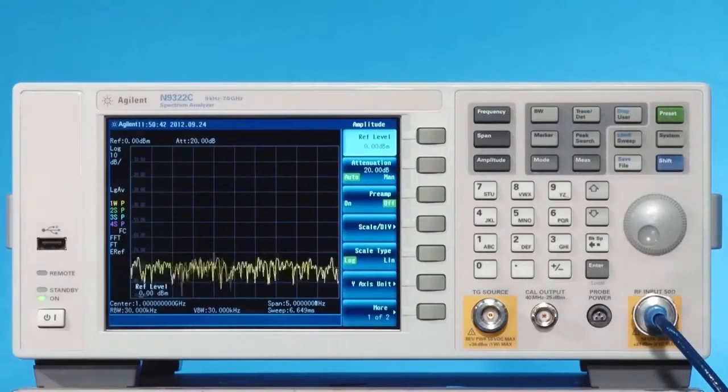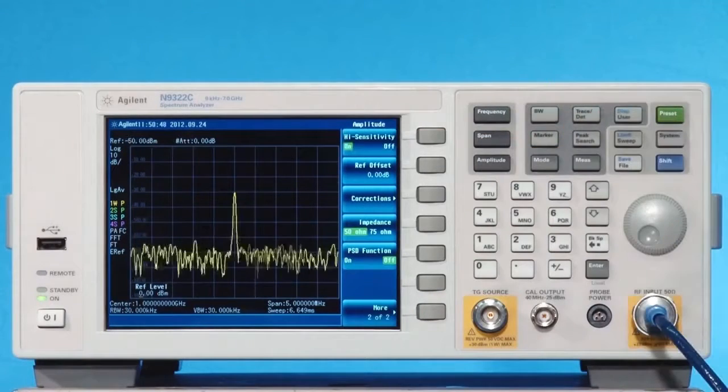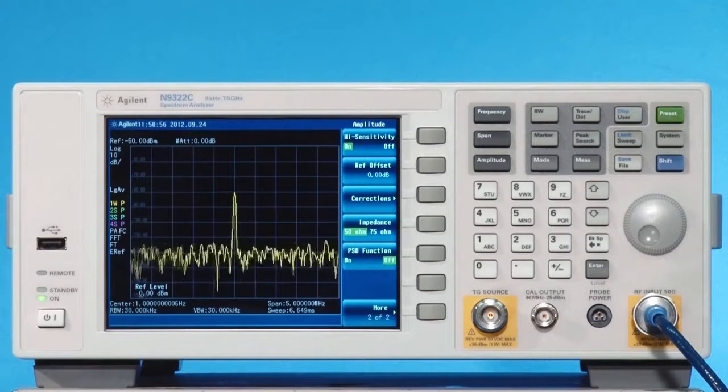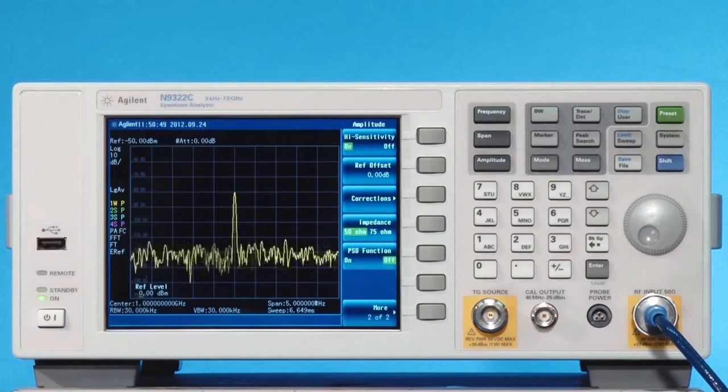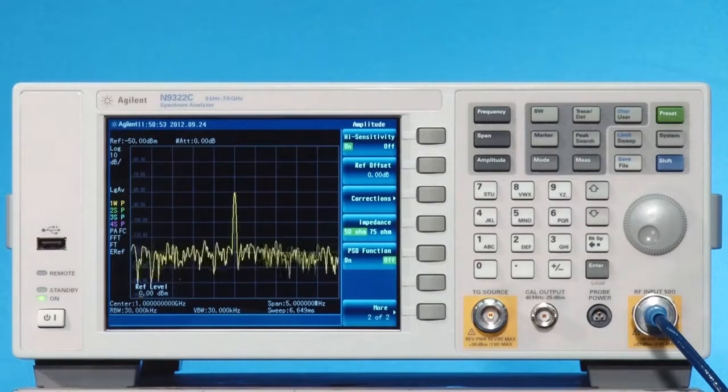Simply push Amplitude and High Sensitivity. You've instantly set the N9322C BSA Spectrum Analyzer's sensitivity measurement status with minus 50 dBm reference level, 0 dB attenuator and pre-amplifier enabled.